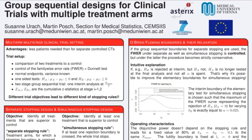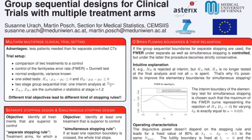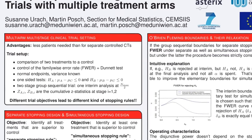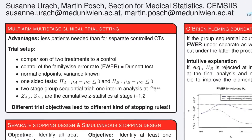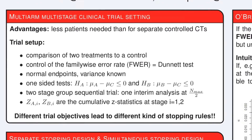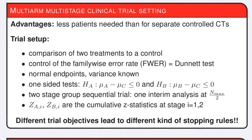Multi-arm, multi-stage clinical trials are important, especially in the framework of rare diseases, because they require fewer patients to compare several treatments to a control than separate clinical trials.